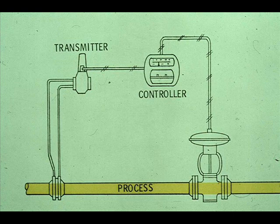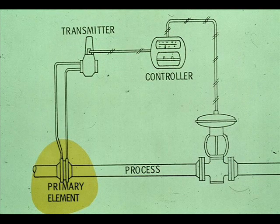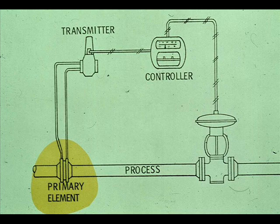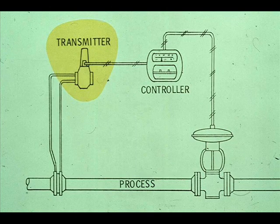Let's look again at a flow control loop. The process or system being controlled is the flowing stream. The process variable is flow rate. The orifice plate is the primary element. It measures delta P, which can be used to calculate flow rate, the process variable. The transmitter, frequently a differential pressure cell, converts the measured delta P into a signal which is proportional to the delta P, and transmits it to the controller.